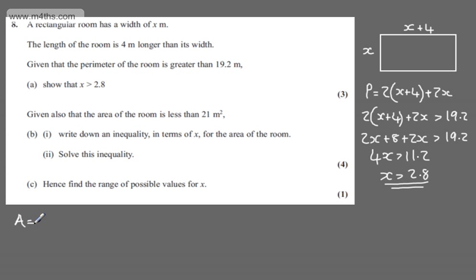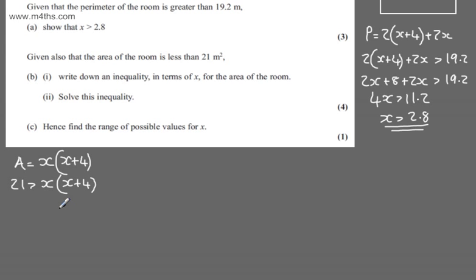We can say that the area is going to be equal to the length times the width, or x multiplied by x plus 4. We know that this is less than 21 meters, so we can say that 21 is greater than x(x+4). So this is an inequality, and we can go ahead and solve this.